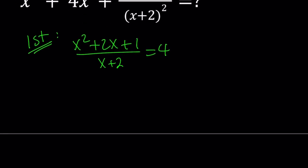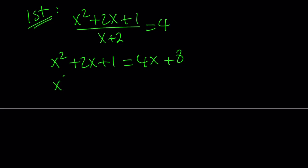Now, I'm going to cross multiply. x² + 2x + 1 is equal to 4x + 8. And then I will collect everything on the same side. Subtract 4x, and then subtract 8. This gives me x² - 2x - 7 = 0.